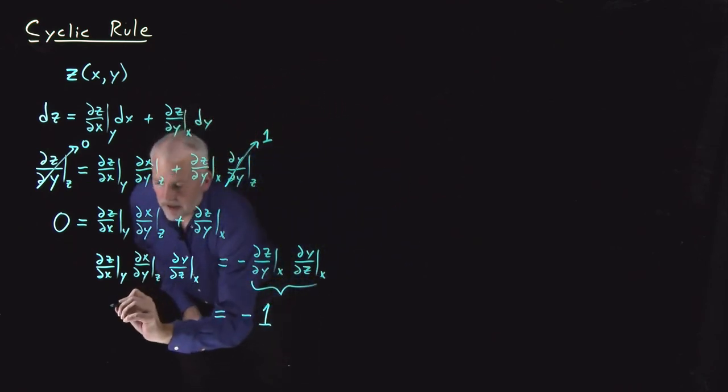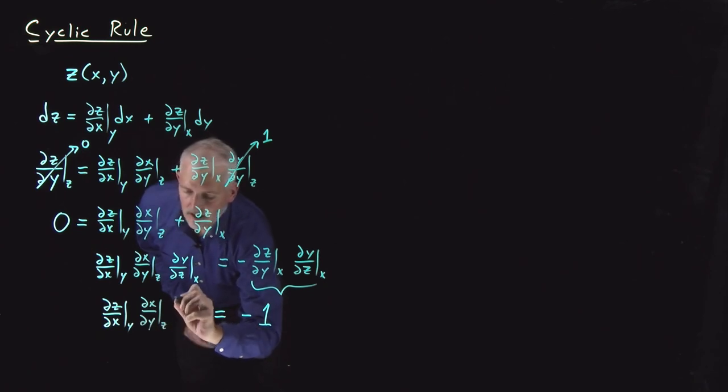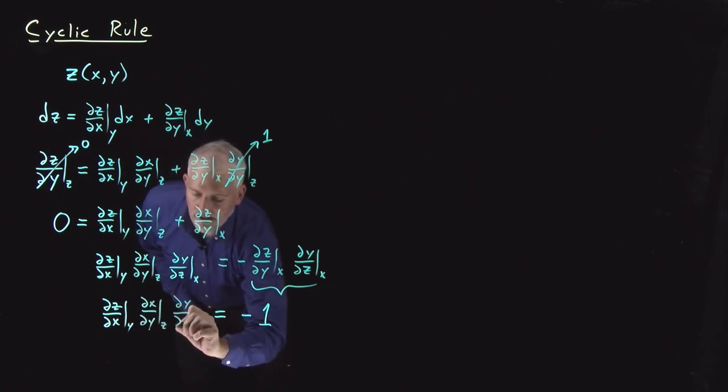And if I rewrite the left side, I've got ∂z/∂x at constant y, ∂x/∂y at constant z, ∂y/∂z at constant x.